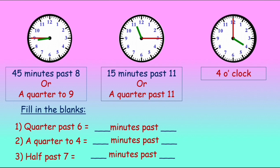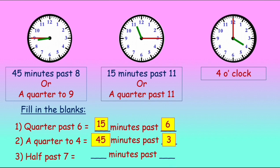Fill in the blanks. Quarter past 6 is the same as 15 minutes past 6, since a quarter is 15 minutes. A quarter to 4 means 45 minutes past 3 — that means 15 minutes are left to complete the next hour. Half past 7 is the same as 30 minutes past 7.